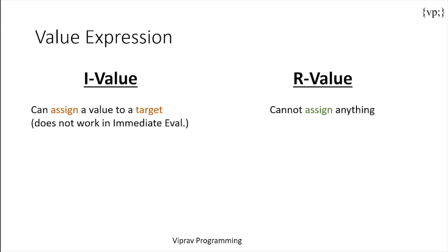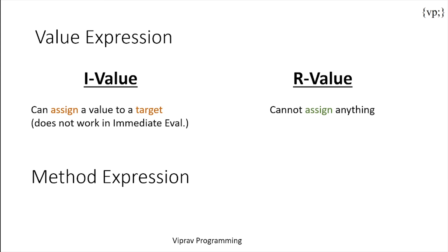In contrast, R-values can't assign to a target and are only used by operations like lambda, addition, or subtraction. Then there are method expressions, which is when Expression Language is used to reference methods instead of variables. This is when you want to do things like validation and other operations that only methods can handle, rather than just data from Expression Language.